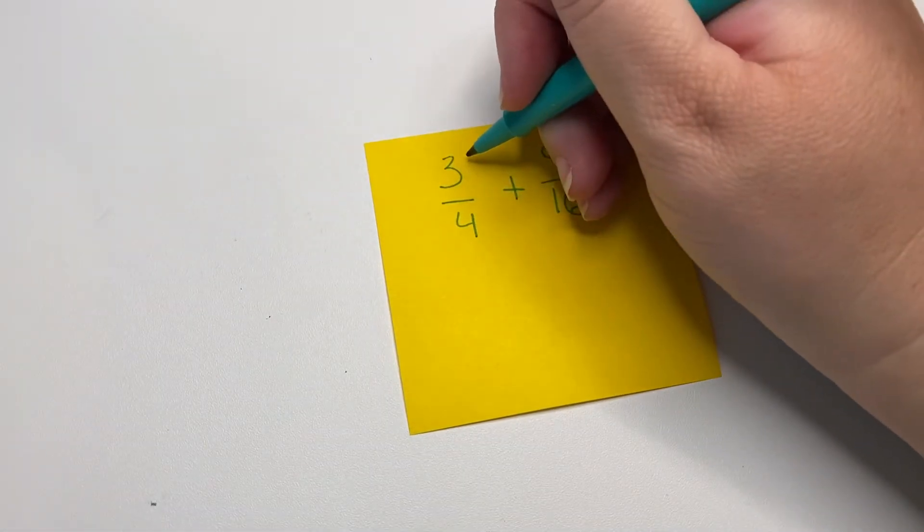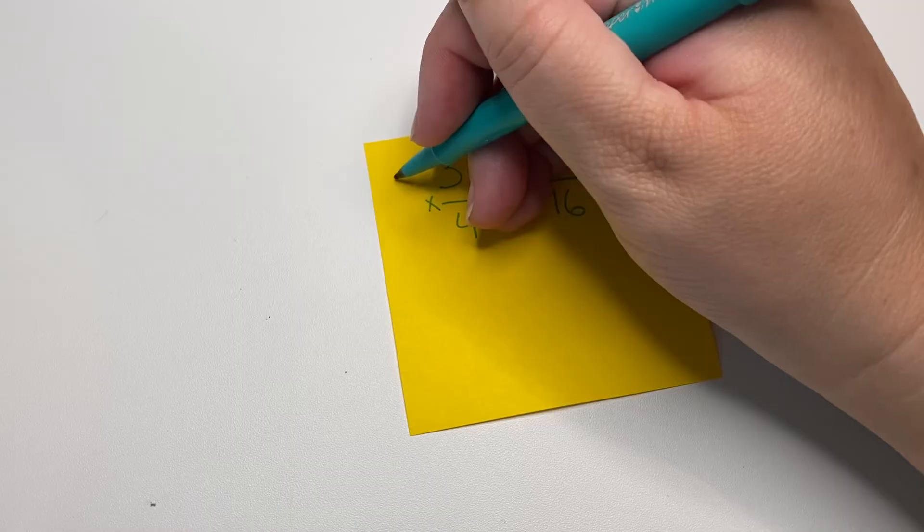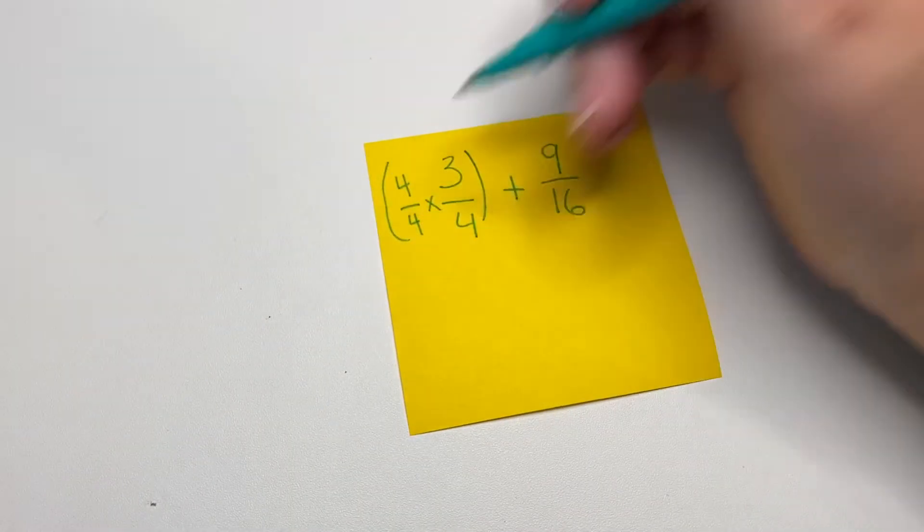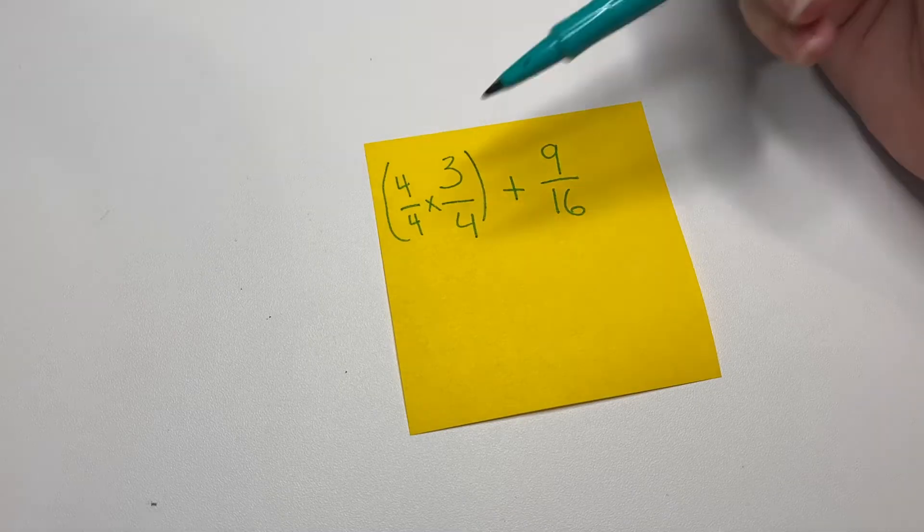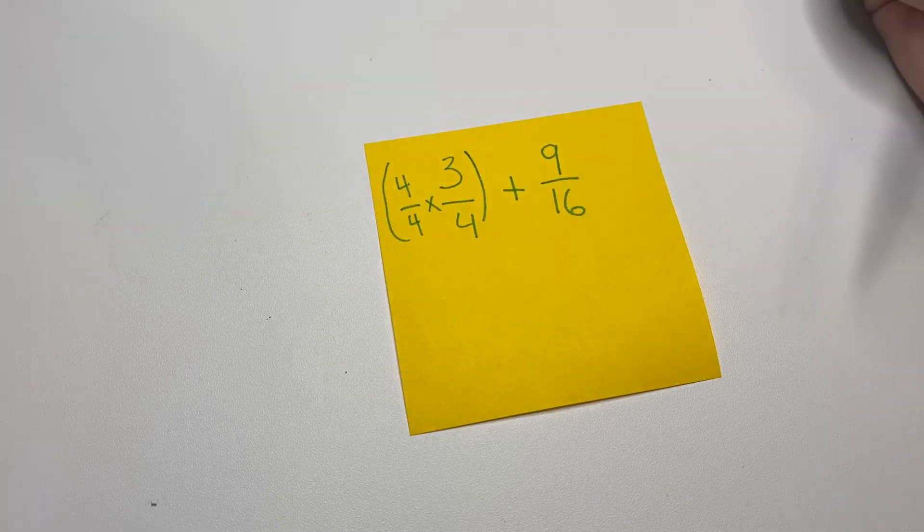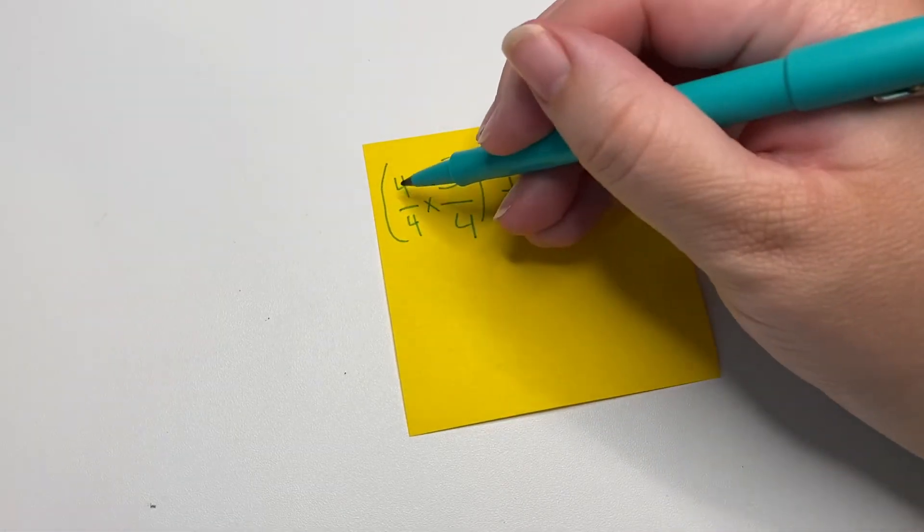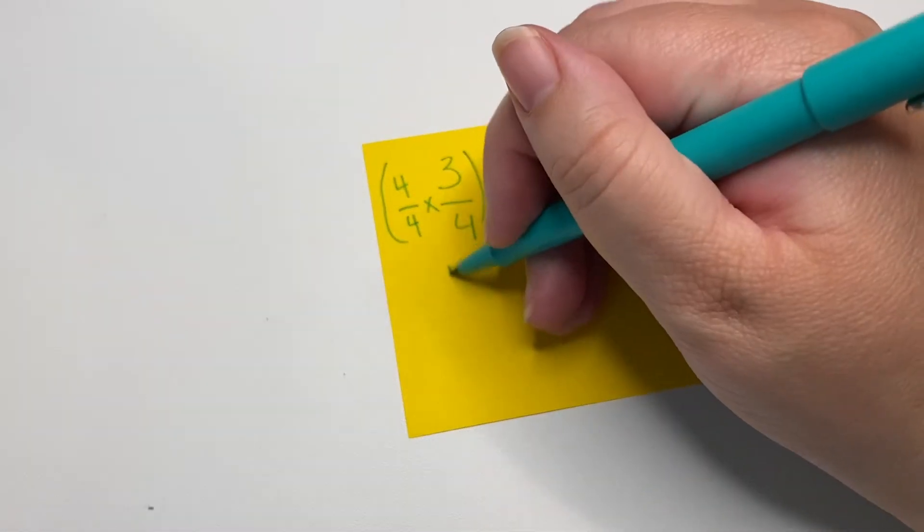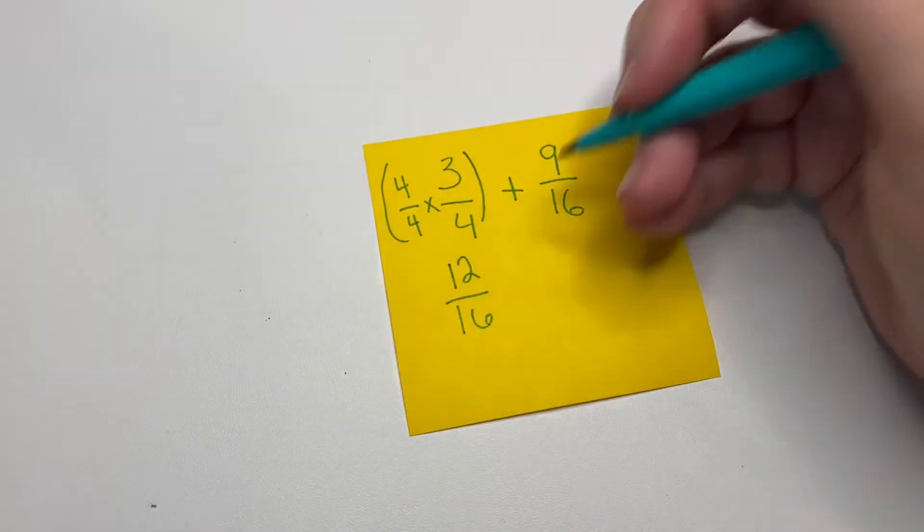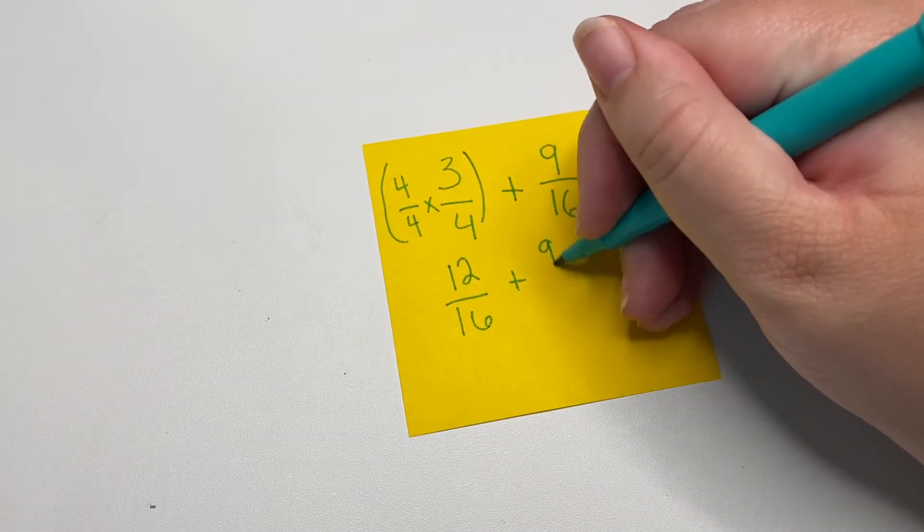So we're going to multiply our 3 fourths times 1, but in this form 4 over 4. And we did that because this will make our denominators the same. So let's do this: 4 times 3 is 12, 4 times 4 is 16.